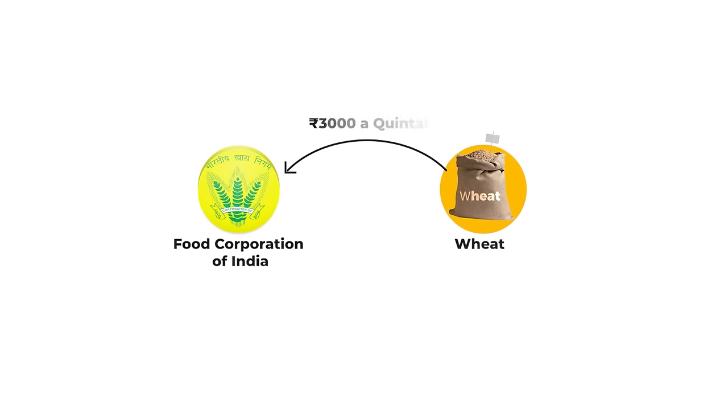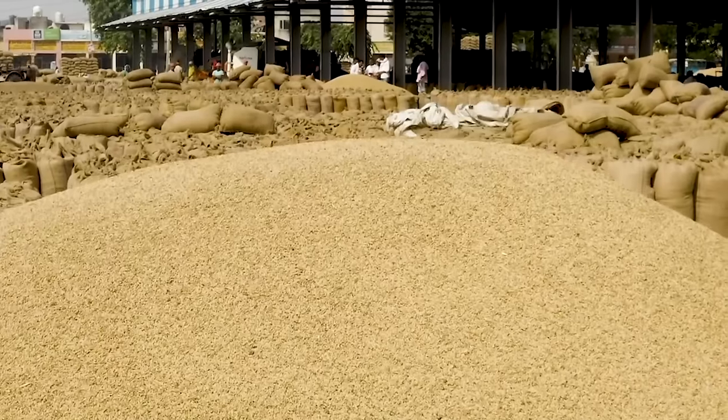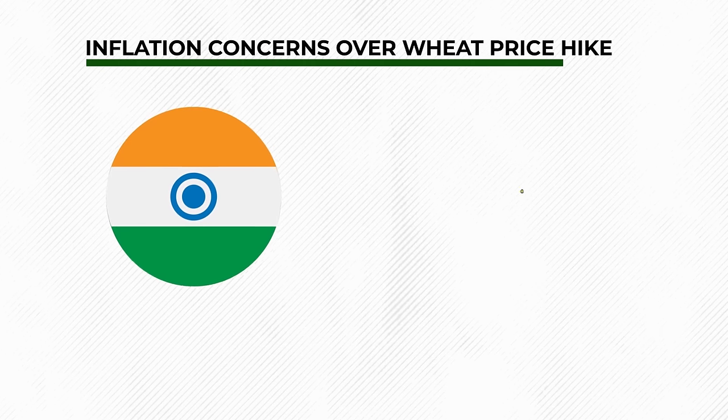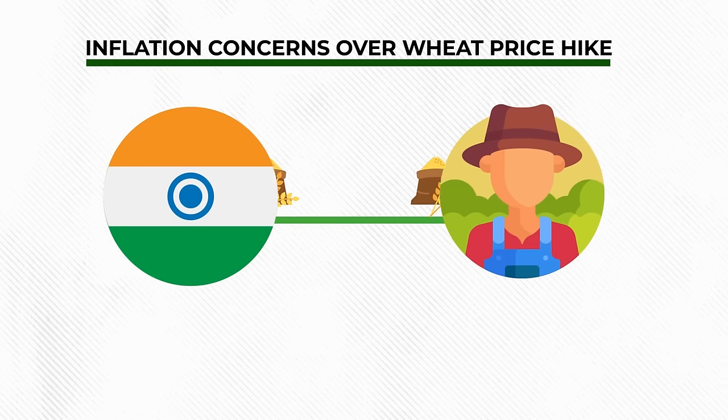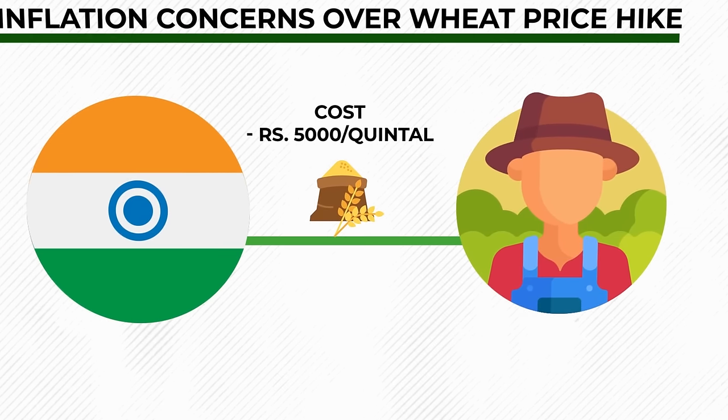The government can sell these crops to private players and make a profit, right? Well, if the Food Corporation of India procures wheat at 3,000 rupees a quintal and there is so much supply that the market is only paying 2,000 rupees a quintal, how can the government sell at a profit? In simple words, unless the government buys all the crops in the country, it cannot tweak the supply and demand forces of the market. And if the government buys every grain of wheat and increases the price to 5,000 rupees a quintal, the farmers will be very happy but people like you and me will start protesting because we will face inflation.